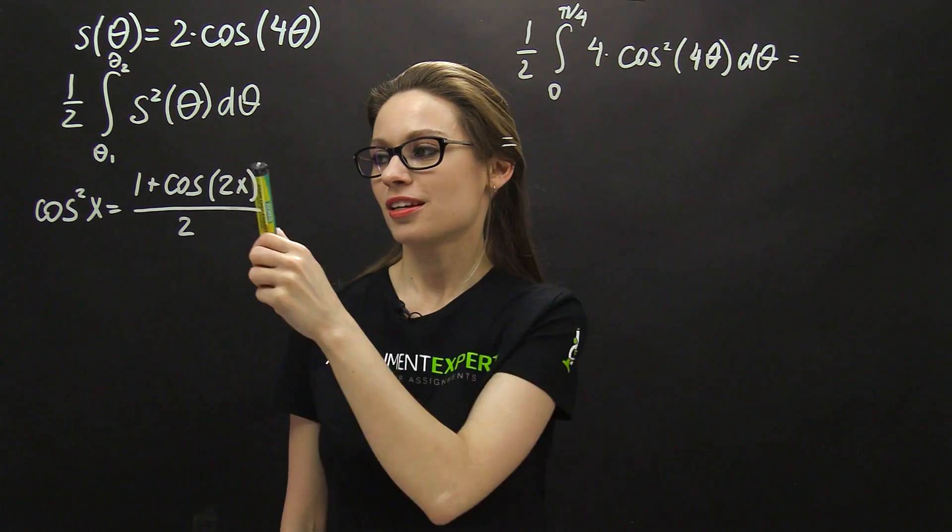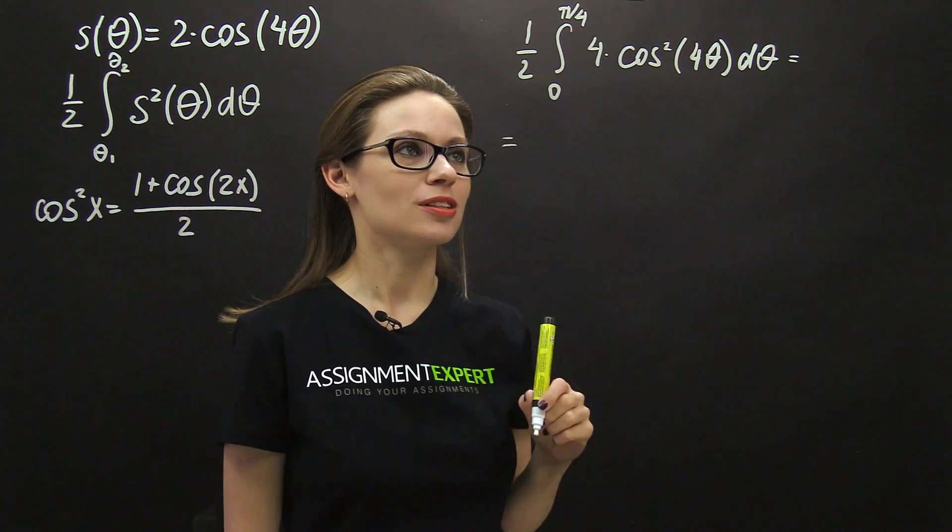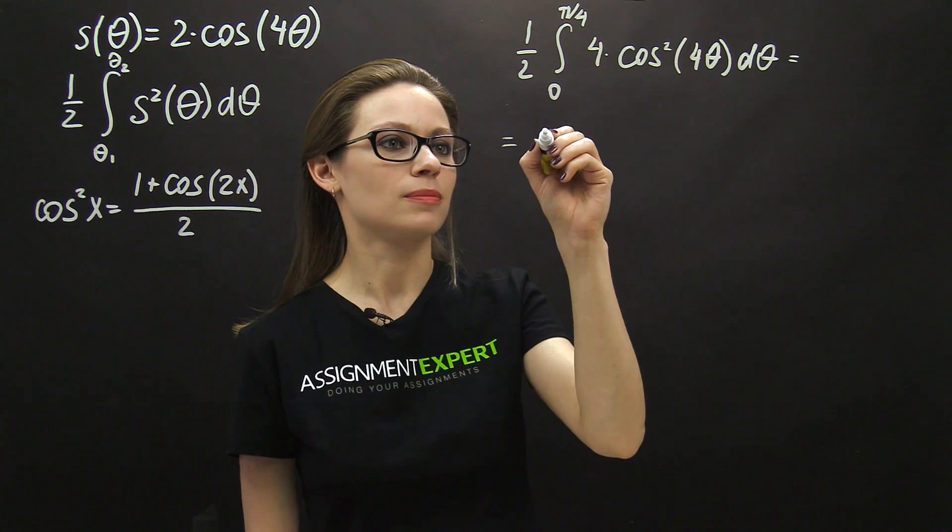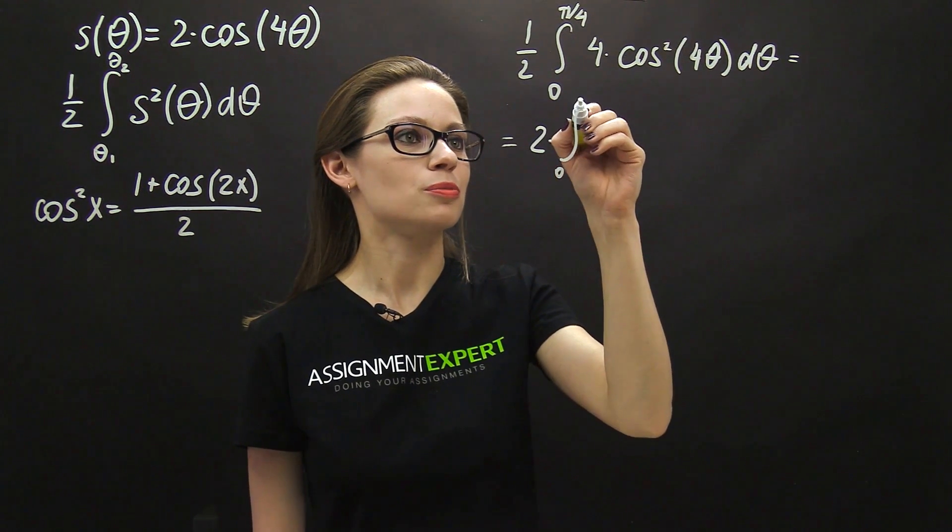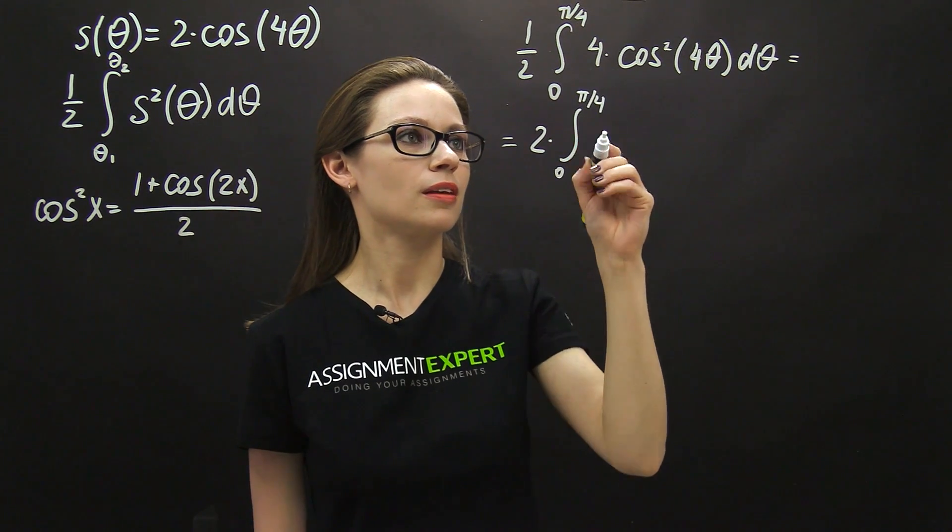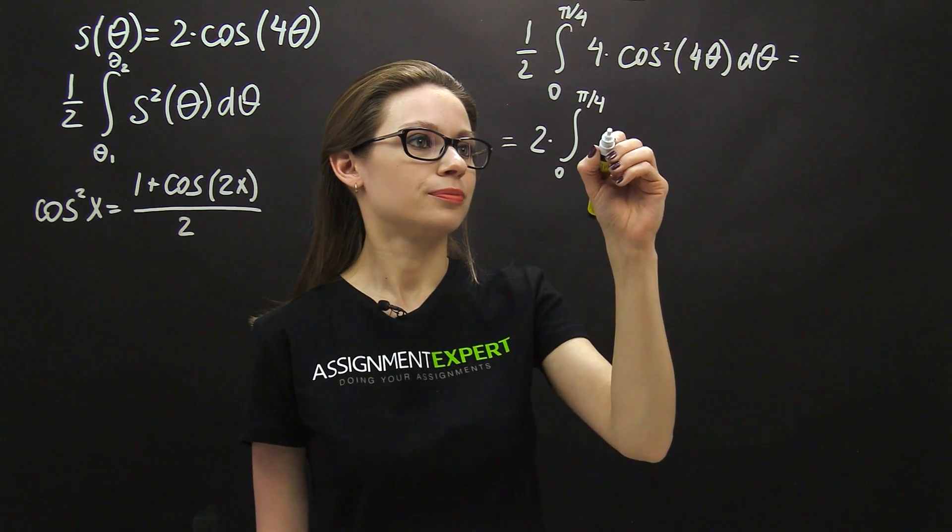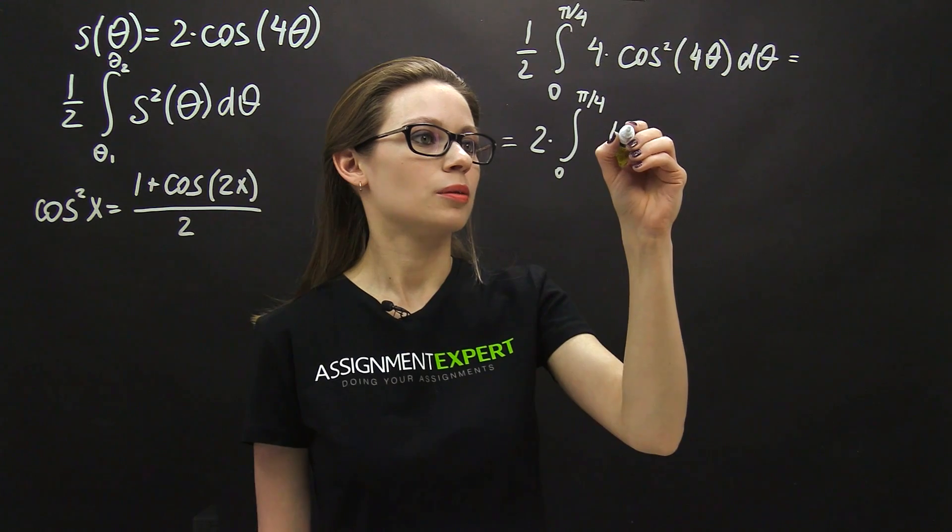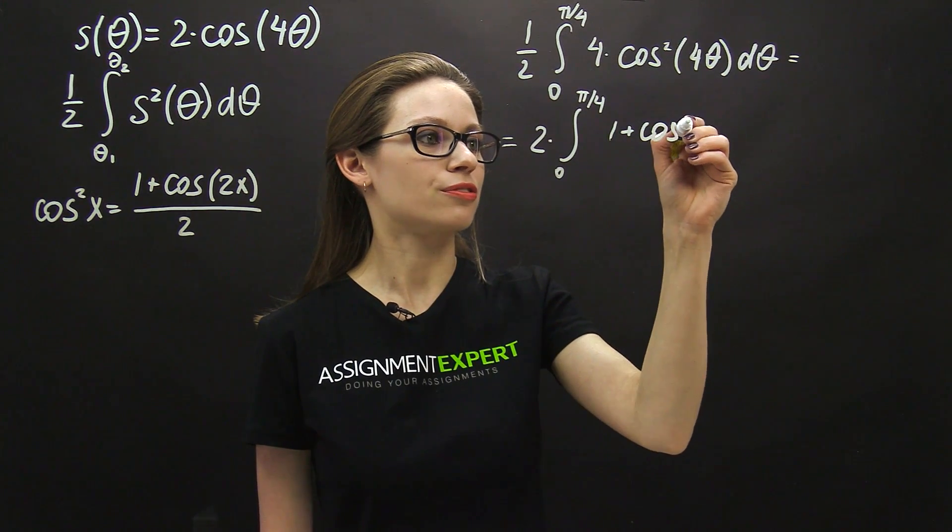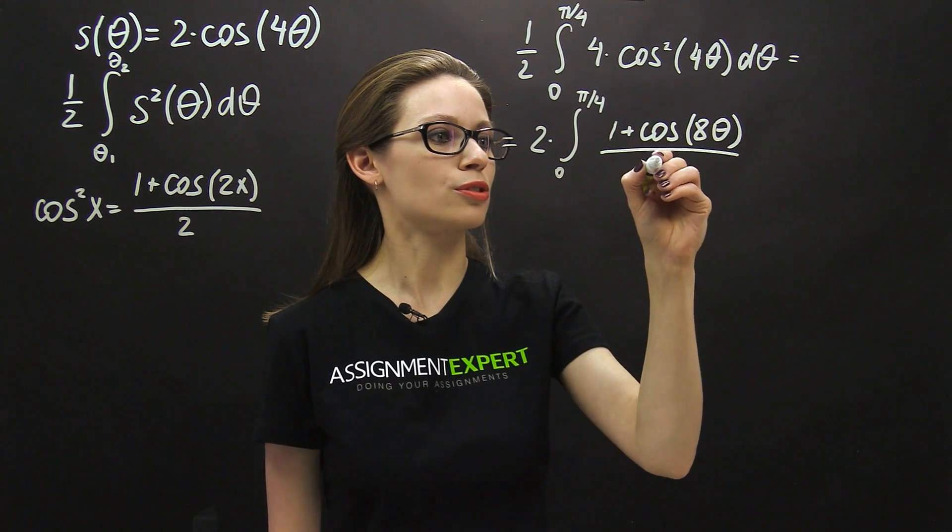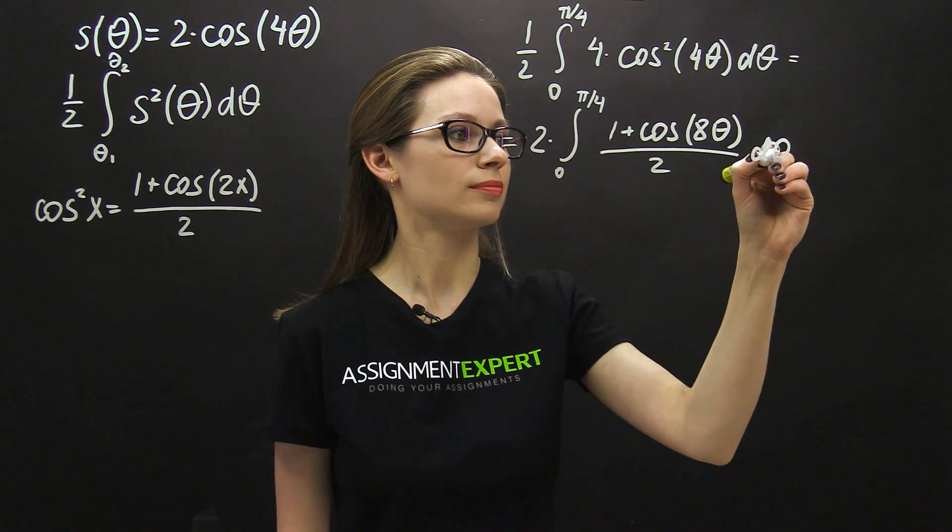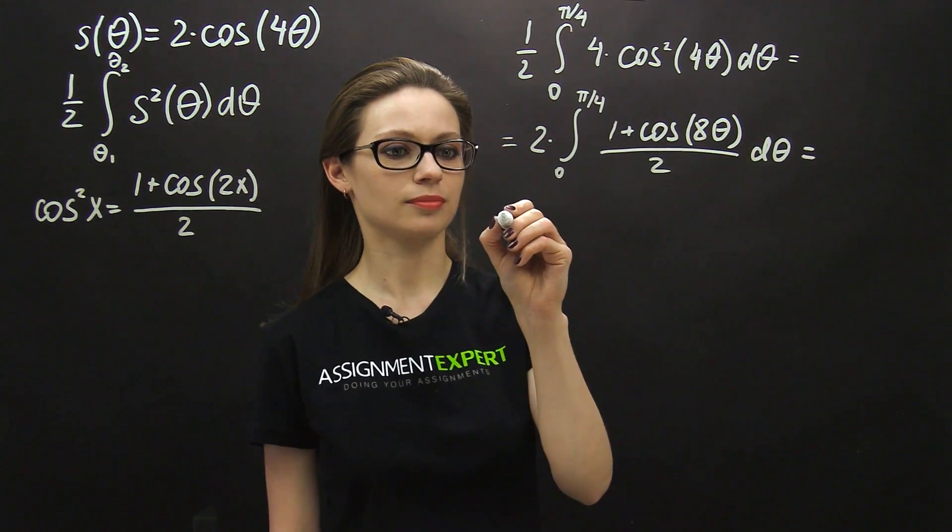So, let's substitute this formula into our expression and we'll have the following: 2 times the integral from 0 to pi over 4 of 1 plus cosine of 8 theta d theta.